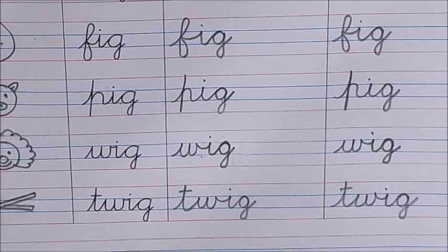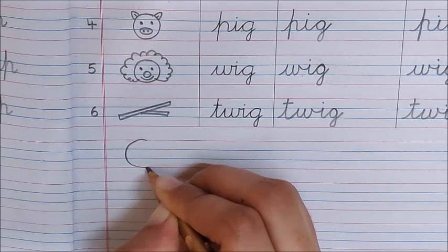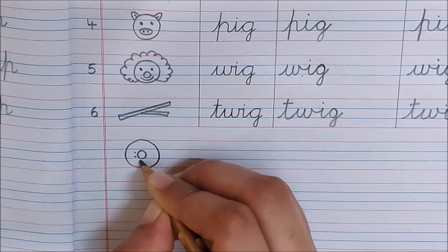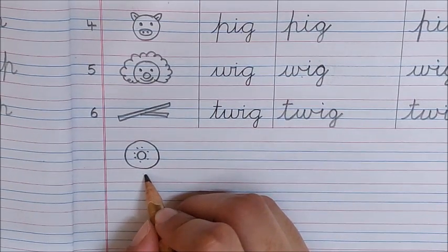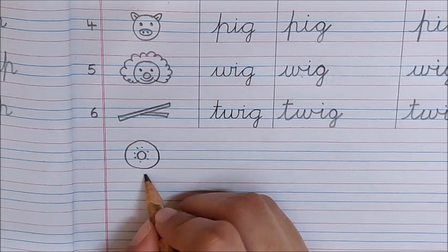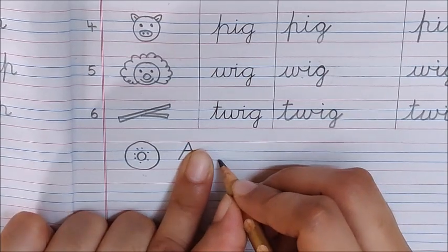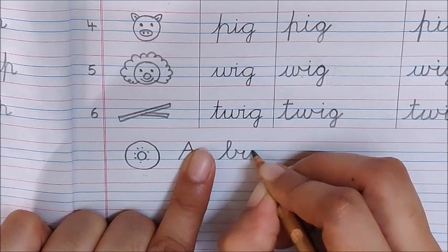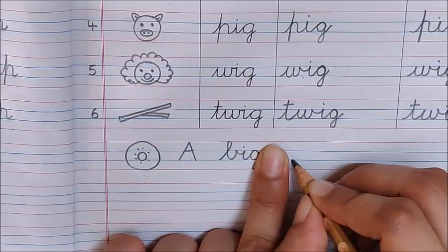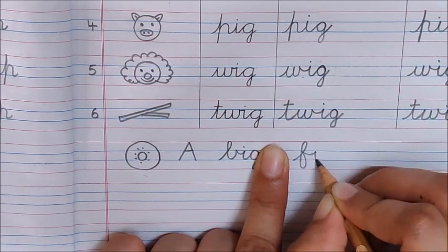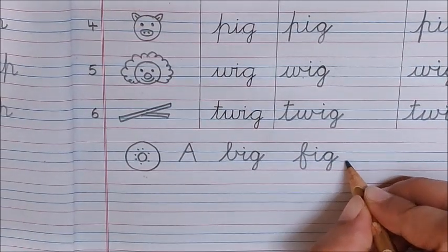Now children, after writing the words, it's time to write a sentence. Below twig, draw a big fig. You know how to draw a fig. I have drawn it. This is a fig which is very big. Can you make a sentence on this fig? A big fig. So let us write the sentence here. A, leave one finger space, write down big. B, I, G. Big. Again leave one finger space and write fig. F, I, G. Fig. A big fig. Our sentence is over, so put a full stop.